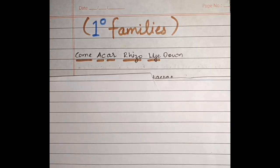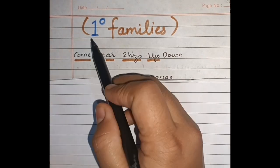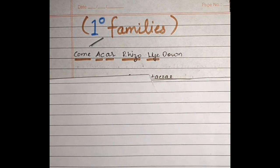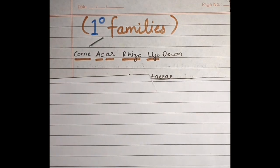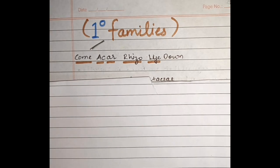Ab hum families ke baare mein padhte hain. Yahan jo maine families likhi hain, inke aage maine 'one degree' likha hai — iska matlab hai primary families. Yaani ki yeh woh families hain jinhein aur bhi bahut saare plants belong karte hain alag-alag botanical families se. But yeh kuch aisi families hain jo ki most common aur primarily aapko mangrove regions pe dekhne ko mil jaayengi. Pehle ek trick: come, acre, riso, lie down.